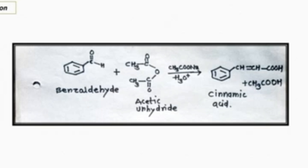Now the reaction: when benzaldehyde is treated with acetic anhydride in presence of sodium ethoxide and H3O+ ions, it gives the formation of cinnamic acid, and acetic acid is removed as a by-product.